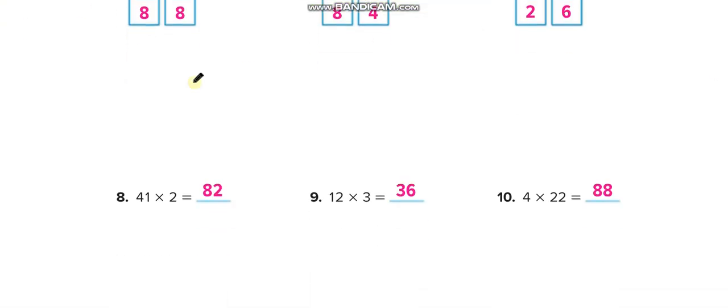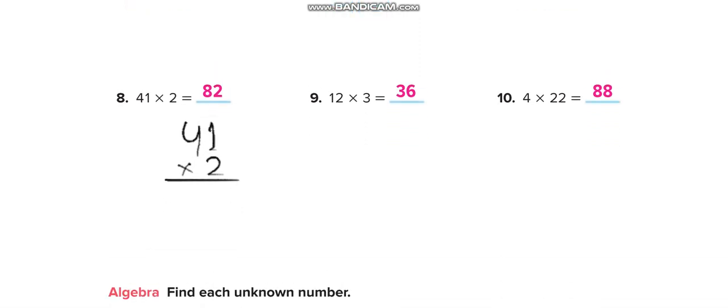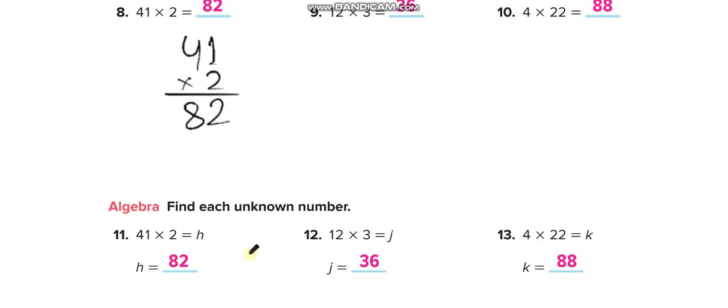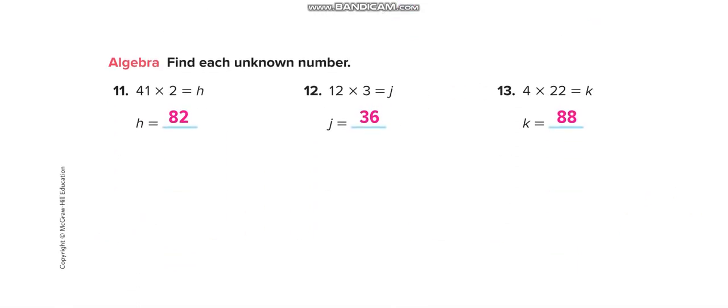In this way: 41 times 2. 2 times 1 is 2, 2 times 4 is 8, so the answer is 82. Solve all these questions guys and then match your answers from this video, but you have to solve it complete.